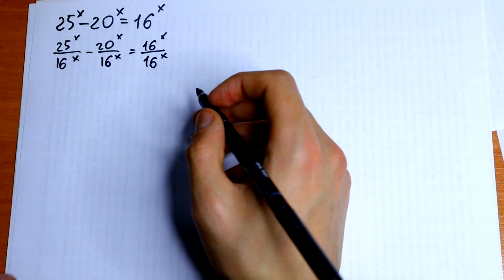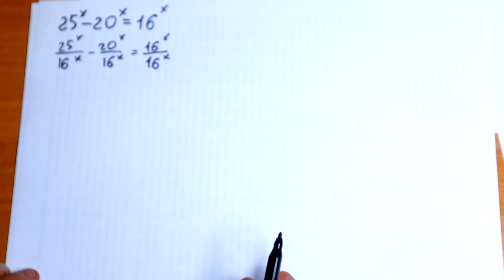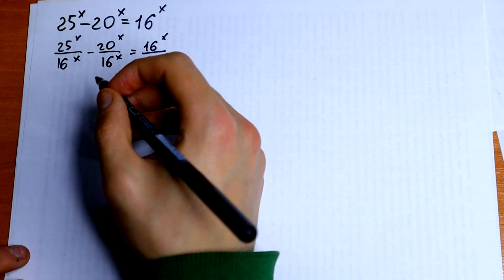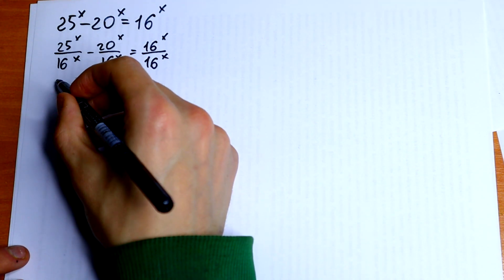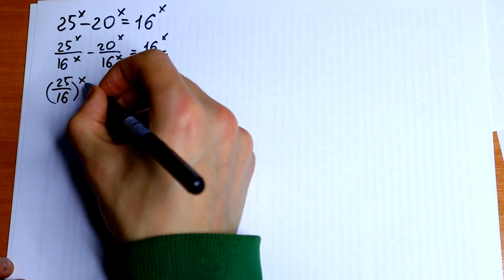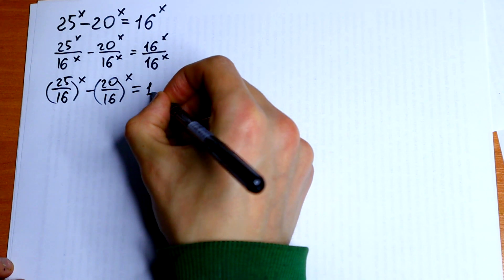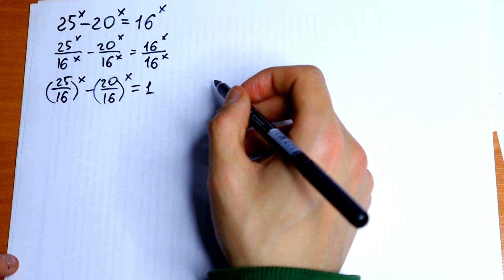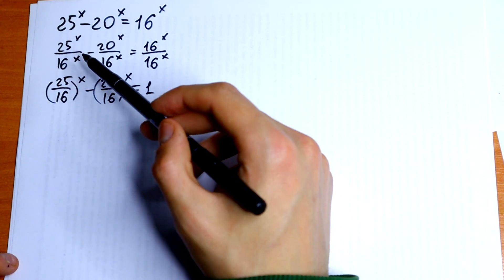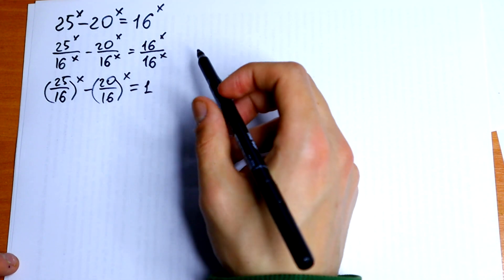What we gonna do next? Simplify this a little bit. The right side will be equal to 1, and the left side we can write in one parentheses. So we can write it as 25 over 16 to the power x, minus 20 over 16 to the power x, equal to 1. We have a property: if we have different bases but same exponent, we can write it in one parentheses using this exponent.